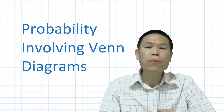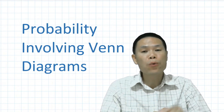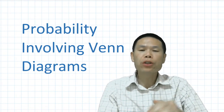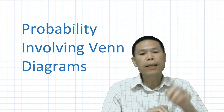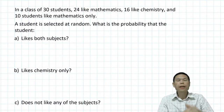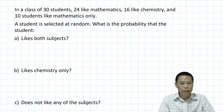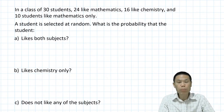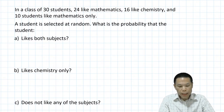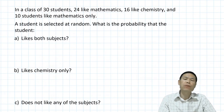Hi there, thank you for clicking my video. This lesson we're going to learn probability with Venn diagrams. If you like, you can download the PDF file in the description below so you can work with me. Let's get straight into it. In a class of 30 students, 24 like mathematics, 16 like chemistry, and 10 students like mathematics only. A student is selected at random. What is the probability that the student: Part A likes both subjects, Part B likes chemistry only, Part C does not like any of the subjects. Before we can answer any of these questions, we need to draw a Venn diagram first.